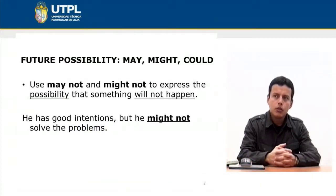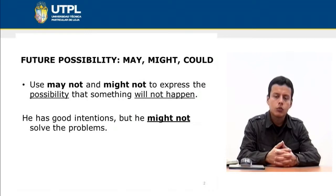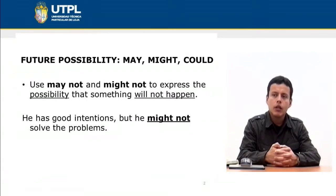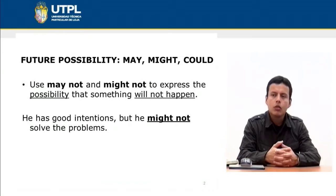To express future possibility, we can use the modals may, might, or could. You can use may not and might not to express the possibility that something will not happen. For example, 'He has good intentions but he may not solve the problems.' In this case, I am expressing the possibility that something will not happen — specifically, the possibility that he could not solve the problems.